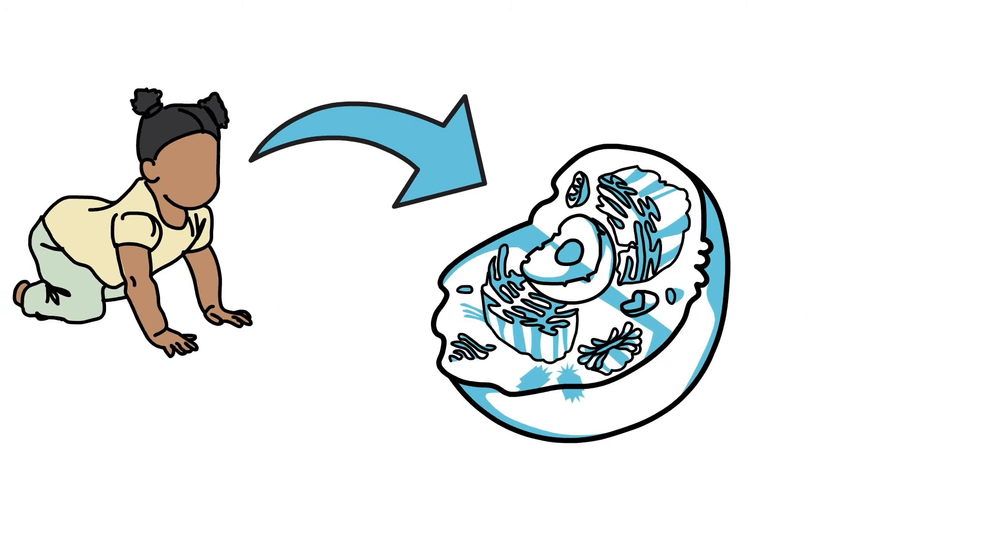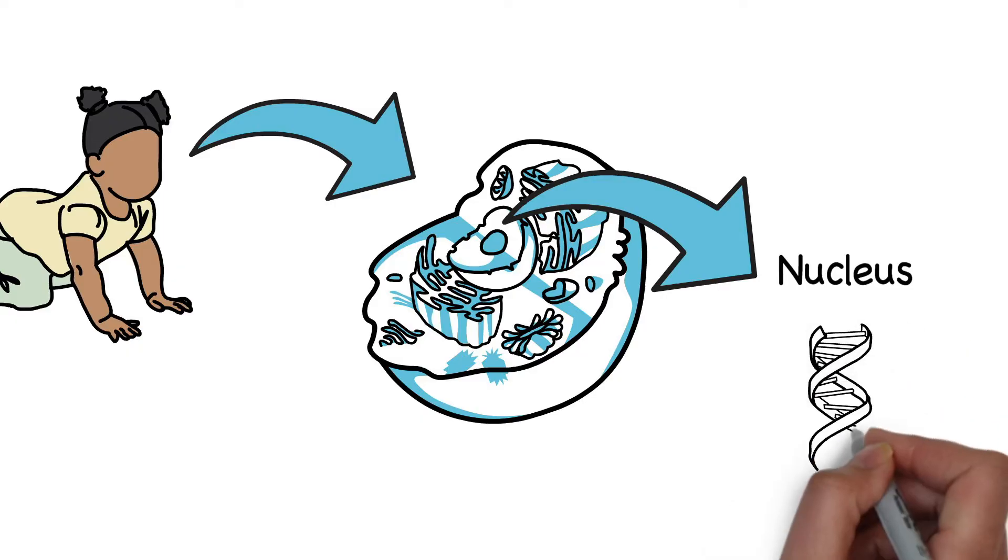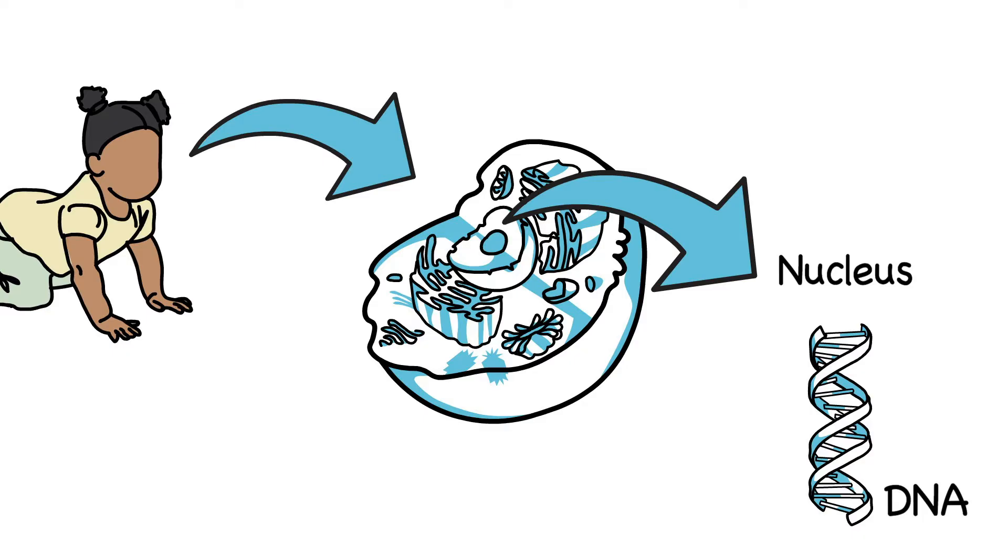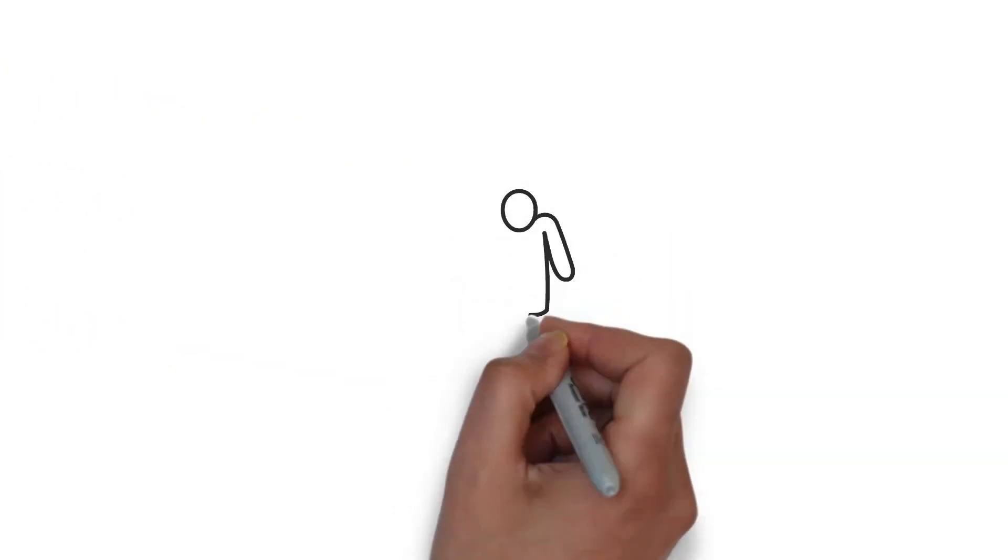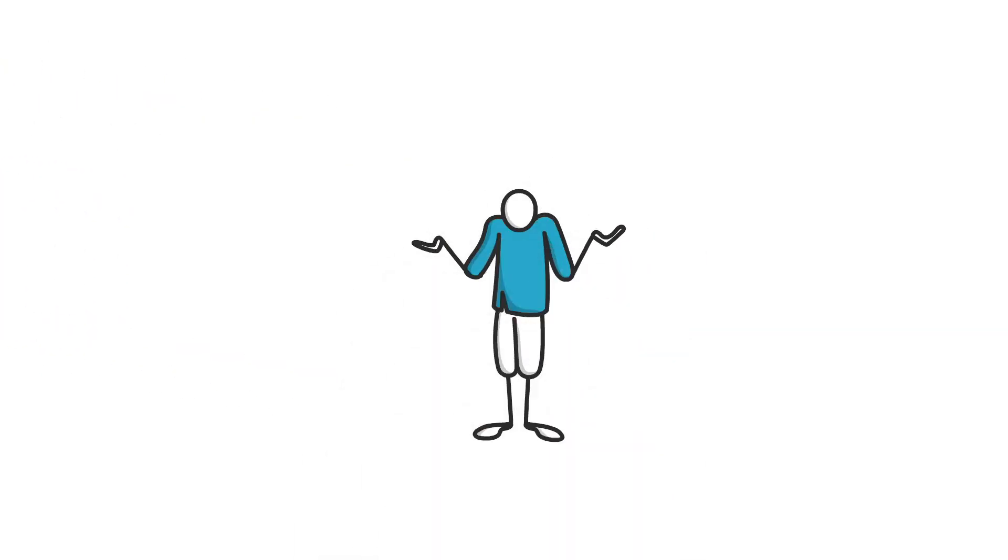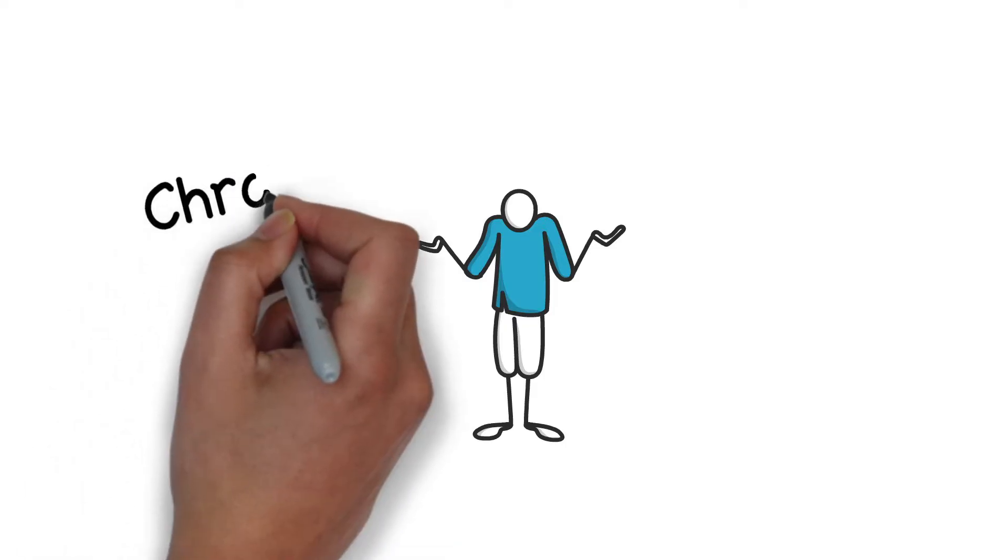These cells contain hereditary information in the nucleus in the form of DNA. Now, talking about DNA and chromosomes, we often come across various confusing terms, like chromatin and chromatid.